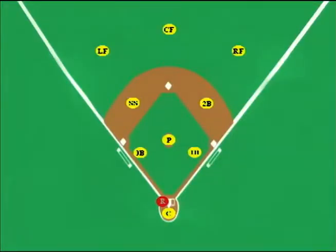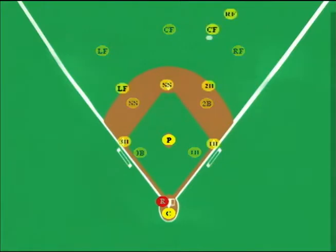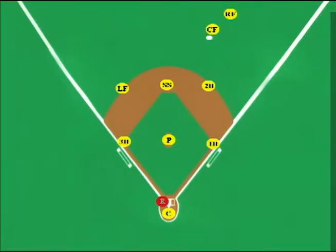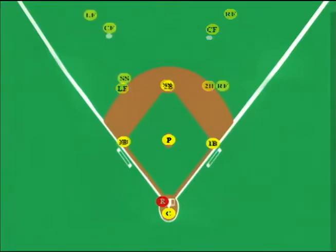Now let's talk gappers between center field and right field. The same thing happens: the second base person will come out as a relay, you have your center fielder coming in, and maybe your right fielder backing up. They're talking — who has it, it's mine — and then the person behind will say, throw it to second base, hold the runner at second. If the second base person comes out as a relay, then the shortstop is going to cover second base. Remember, on the left side with the shortstop coming over, the second base person covers second. It's that shifting, that balance.